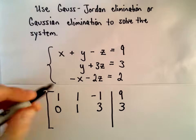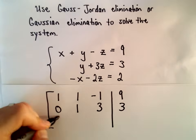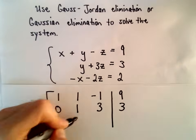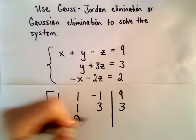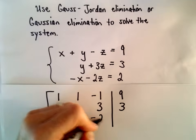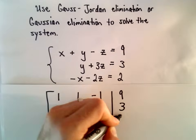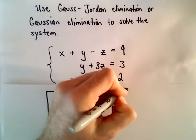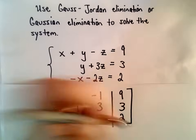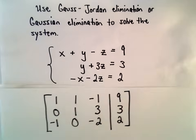And from our last row, we have negative 1x, we have 0y, negative 2z, and our constant is positive 2.